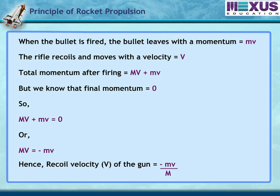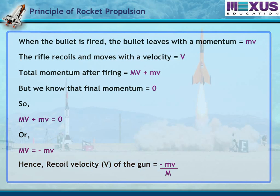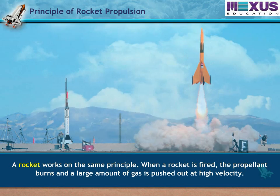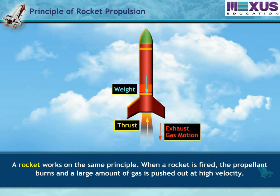So the recoil velocity V of the gun is equal to minus mV upon M. A rocket works on the same principle.